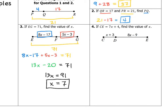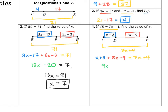Number four: line segment CE equals 7X plus 4, so that's the entire segment. We're supposed to find the value of X. We're going to add X plus 3 and 8X minus 9, and set those two segment measures equal to the entire segment, 7X plus 4. X plus 8X is 9X, and 3 minus 9 is negative 6, so on the left side we get 9X minus 6, and on the right side 7X plus 4. Subtracting 7X from both sides gives 2X minus 6 equals 4. Adding 6 gives 2X equals 10, and dividing by 2 gives X equals 5.